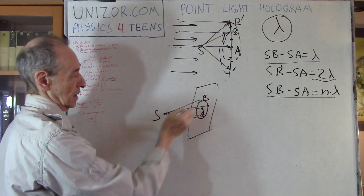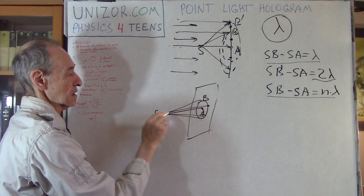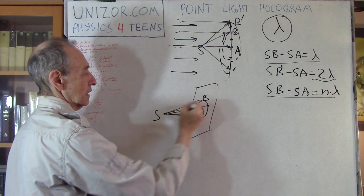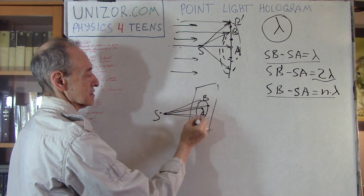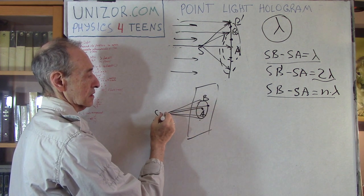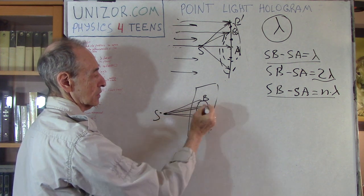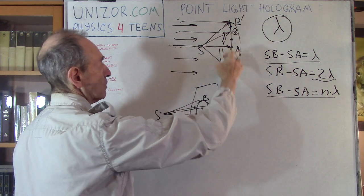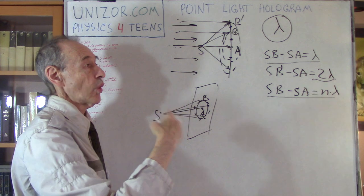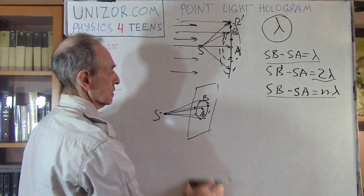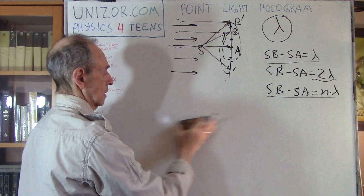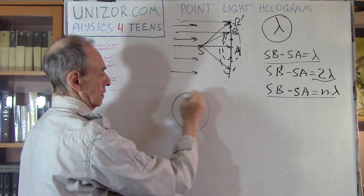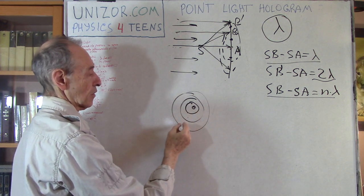Viewed from the front, the picture would be: bright, dark, bright, dark, bright, etc. — concentric rings. The picture would look like alternating bright and dark concentric circles centered on A.